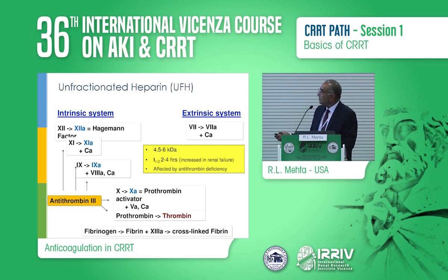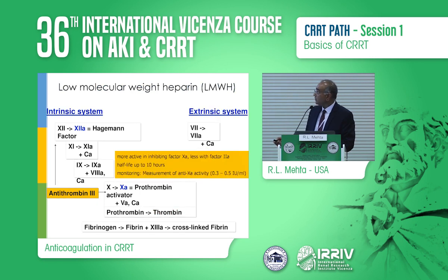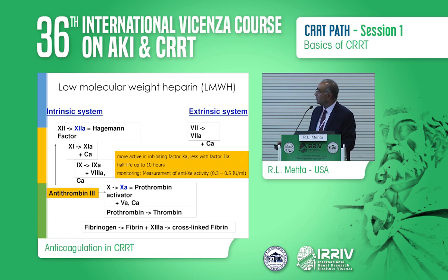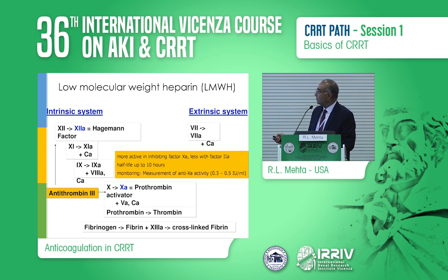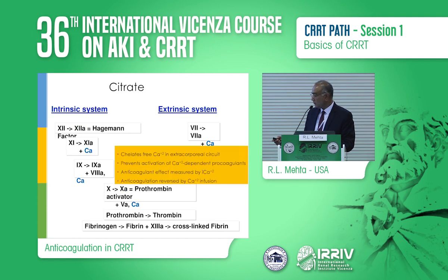Unfractionated heparin has a half-life of about two to four hours, but it is affected by antithrombin-3 deficiency. In contrast, low-molecular-weight heparin has a much more specific action on factor Xa. Anti-factor Xa becomes its monitoring component overall, and it has a half-life of about 10 hours in contrast to unfractionated heparin's two to four hours.